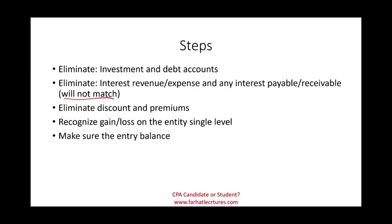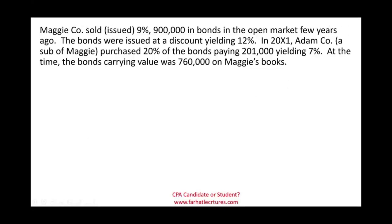The best way to illustrate this is with a complete example. Maggie sold a 9%, $900,000 bond in the open market a few years ago. The bond was issued at a discount yielding 12% — the yield is greater than the coupon, so it was issued at a discount. If you are not familiar with how bonds are issued, I would suggest reviewing my intermediate accounting course on bonds at Farhat Lectures.